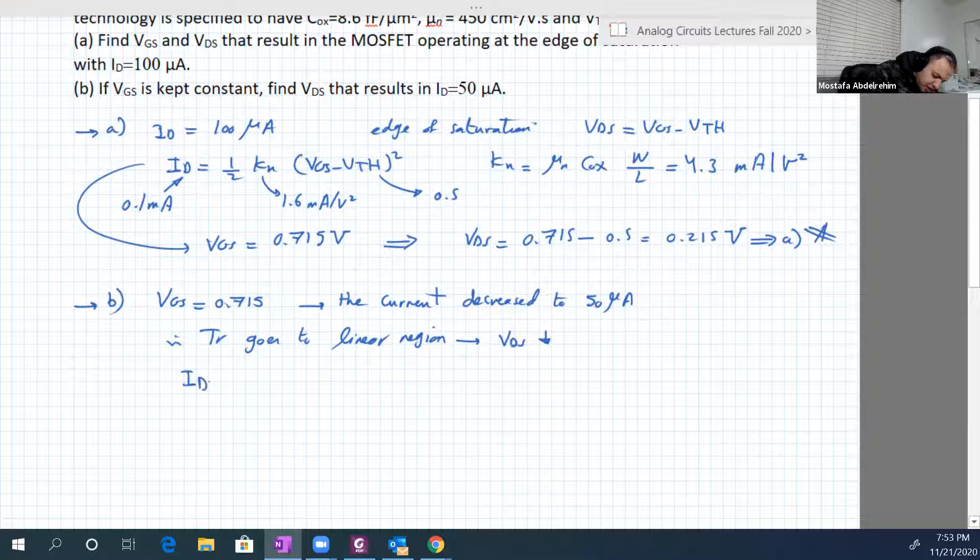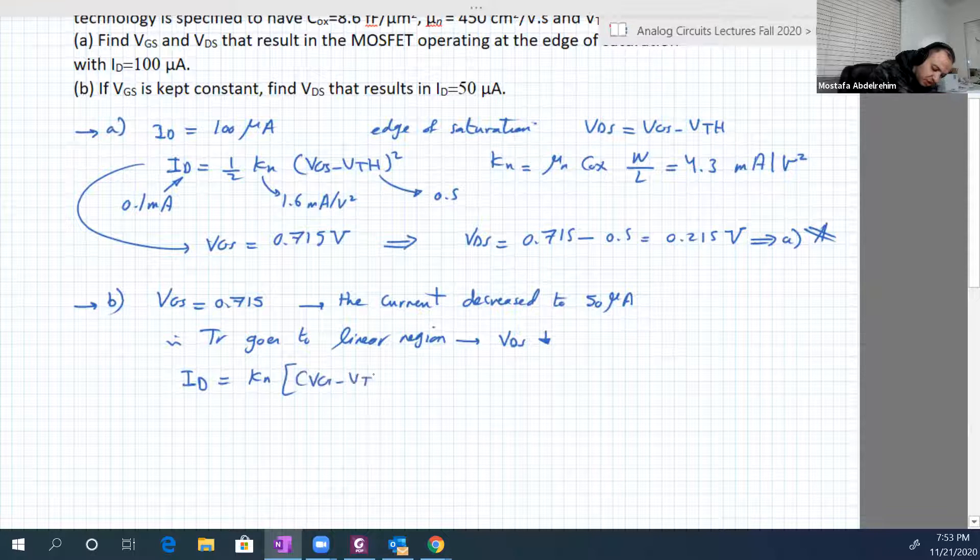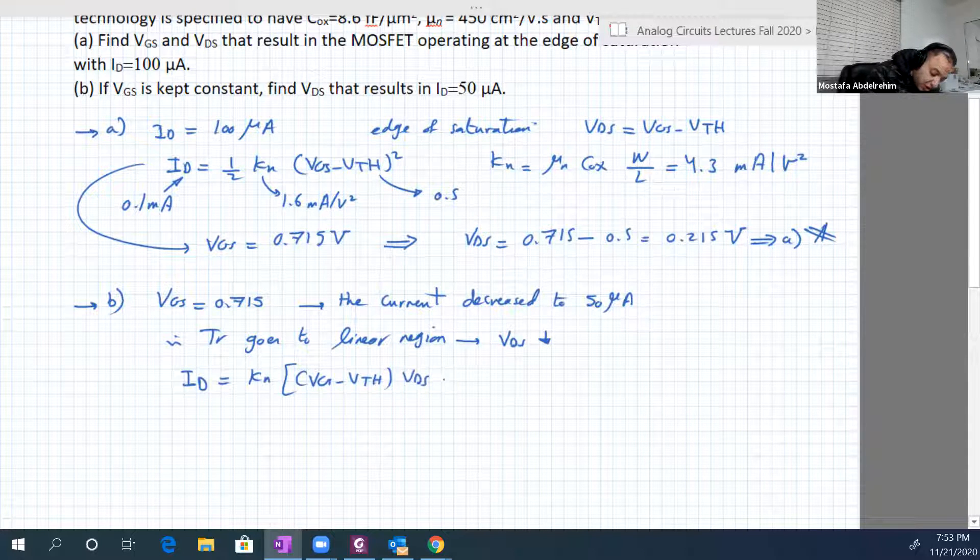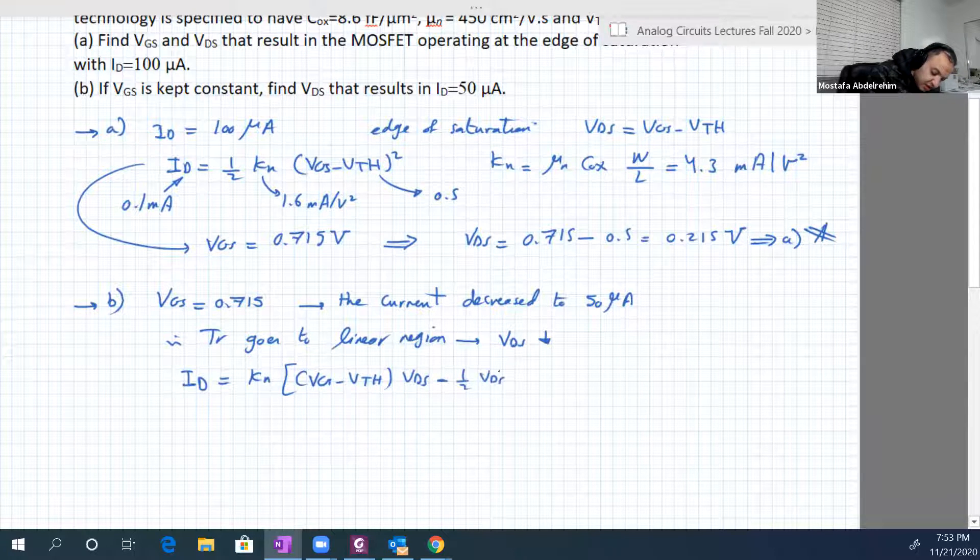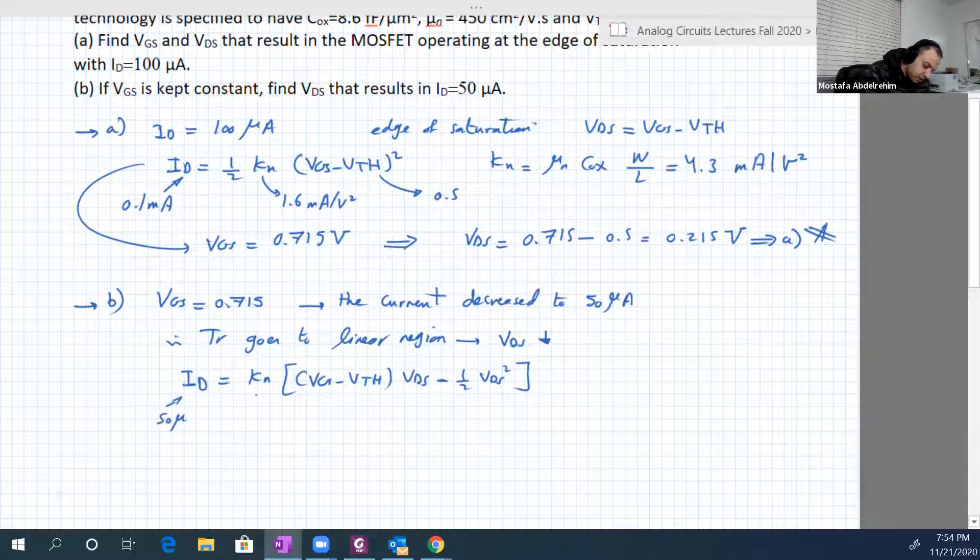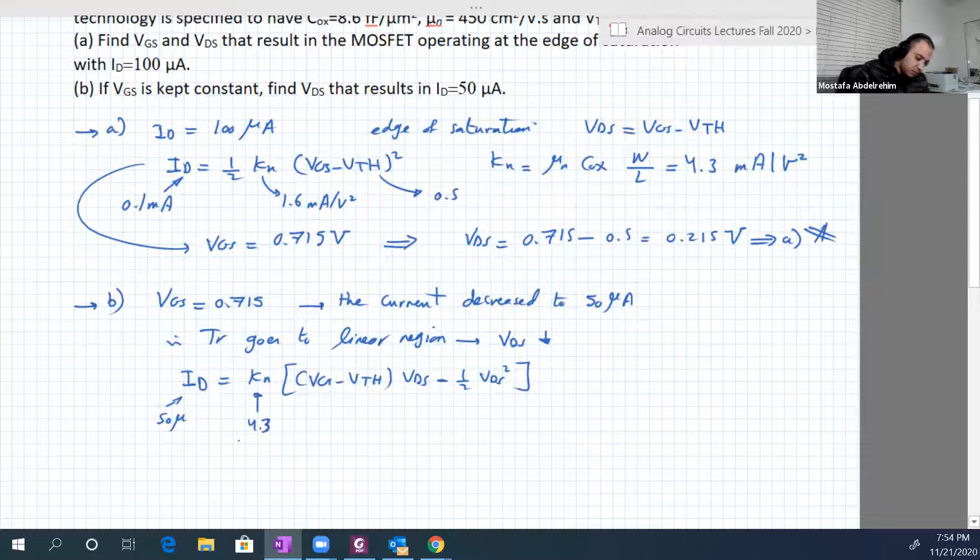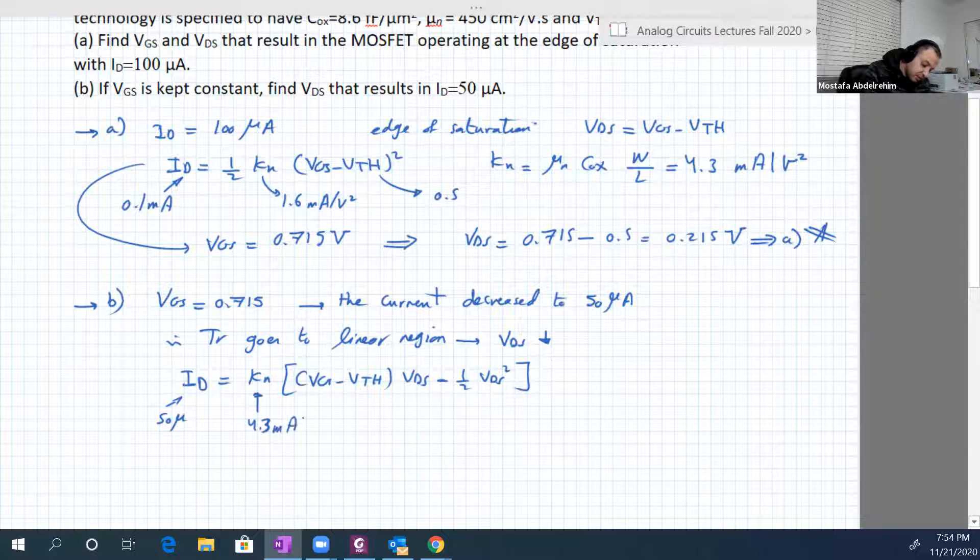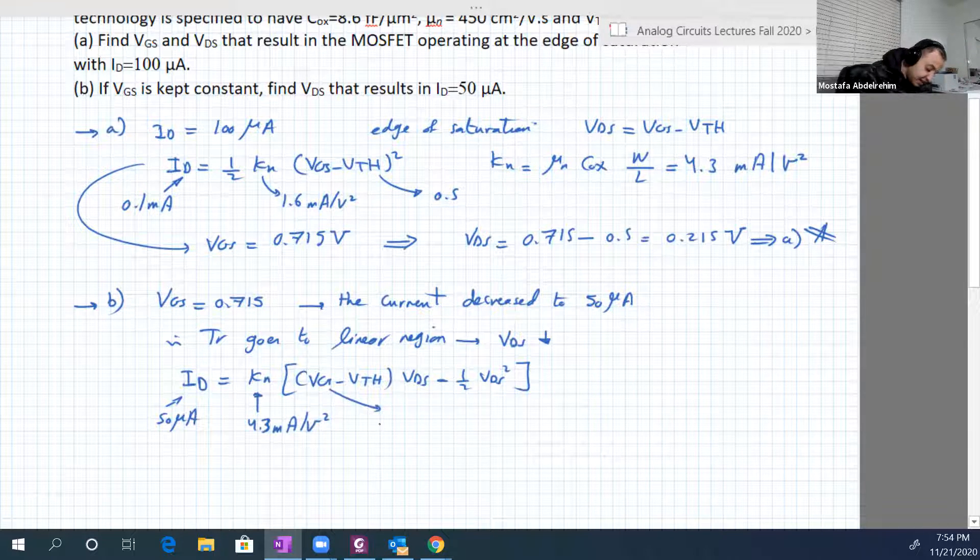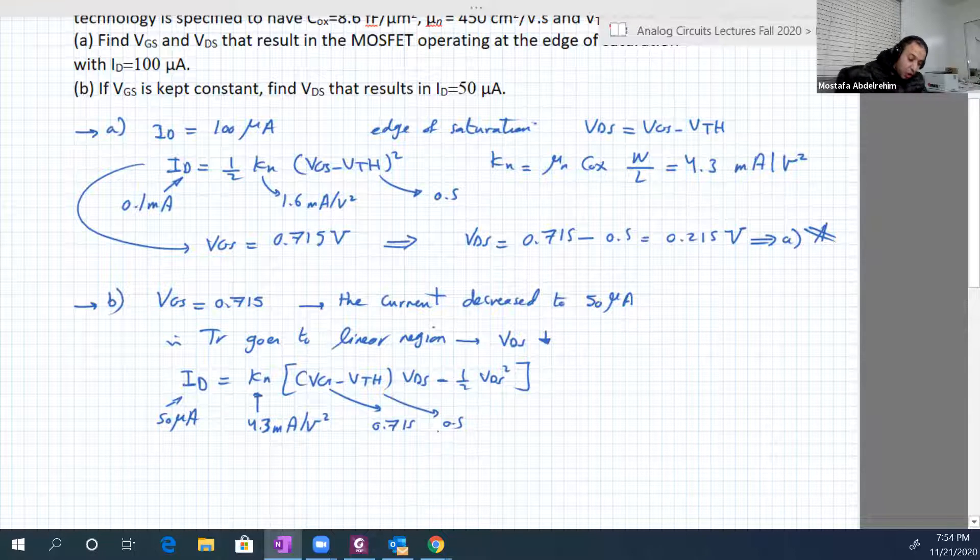We know in linear region ID is equal to KN times VGS minus V threshold times VDS minus half VDS square. ID is known, 50 micros. KN is also known, we got it 4.3 milliampere per volt square. VGS is still at its value 0.715, V threshold 0.5. So the only unknown here is VDS.